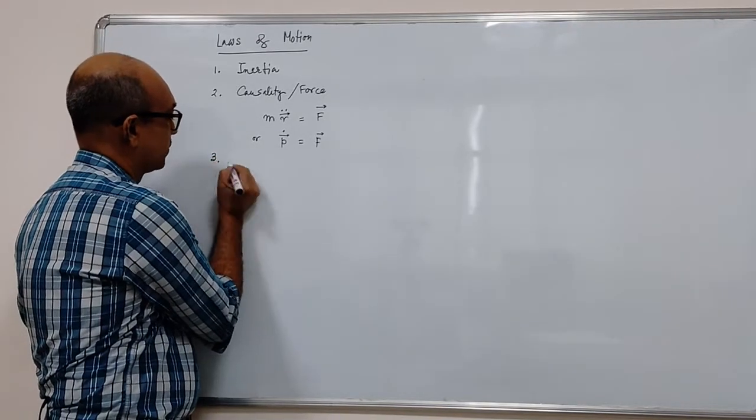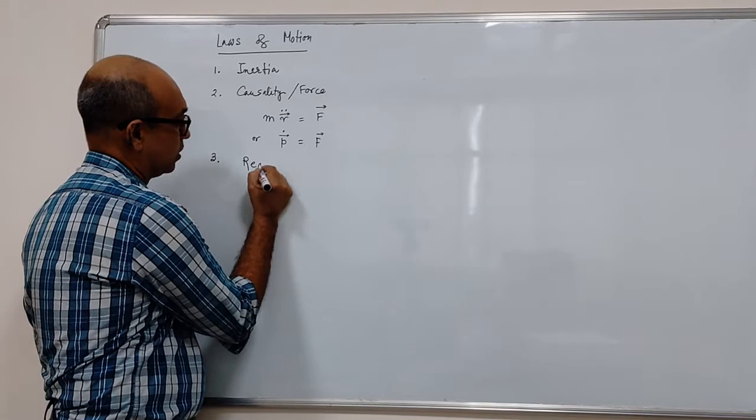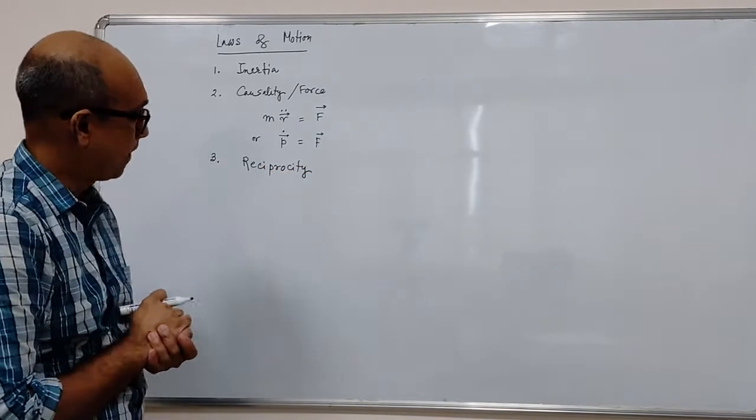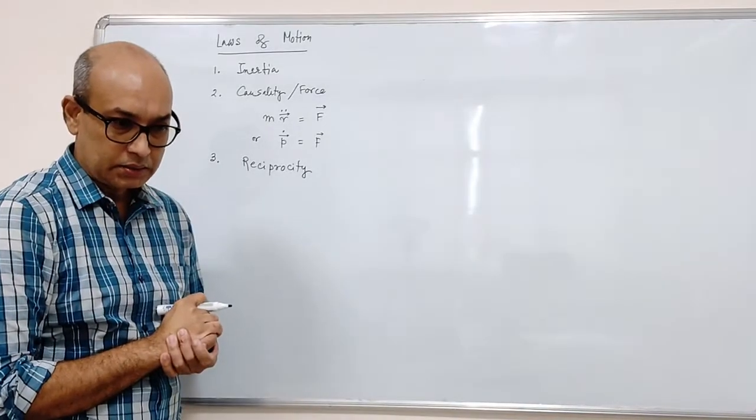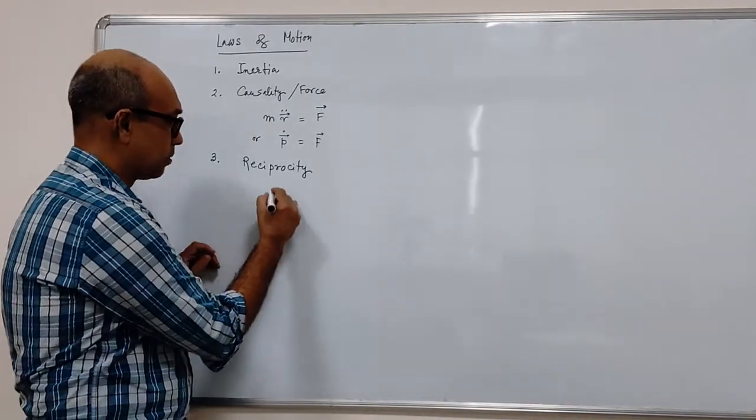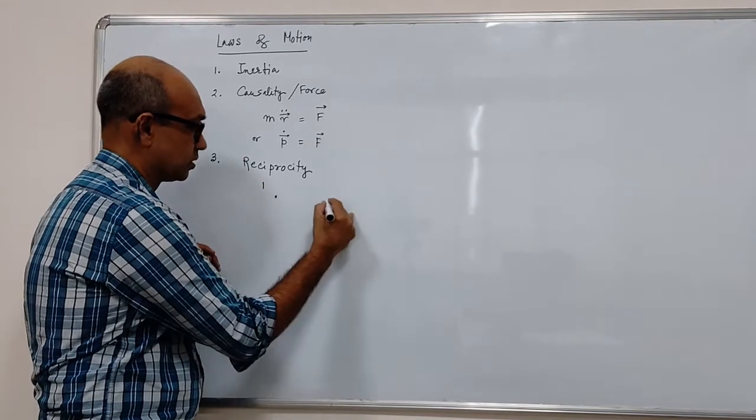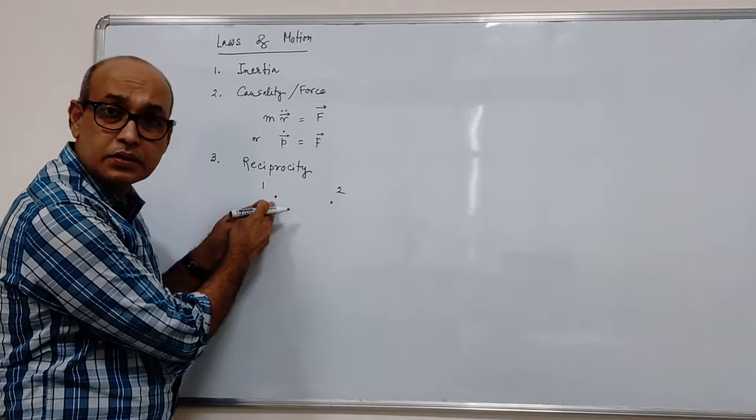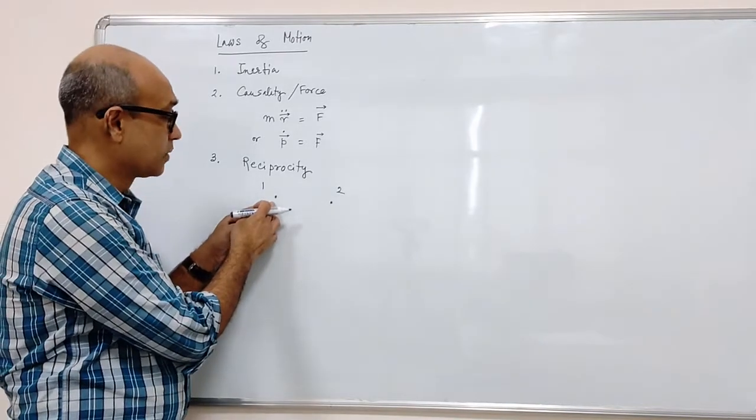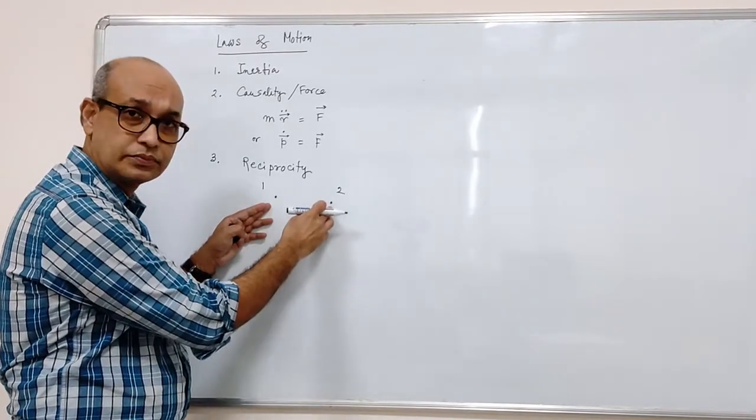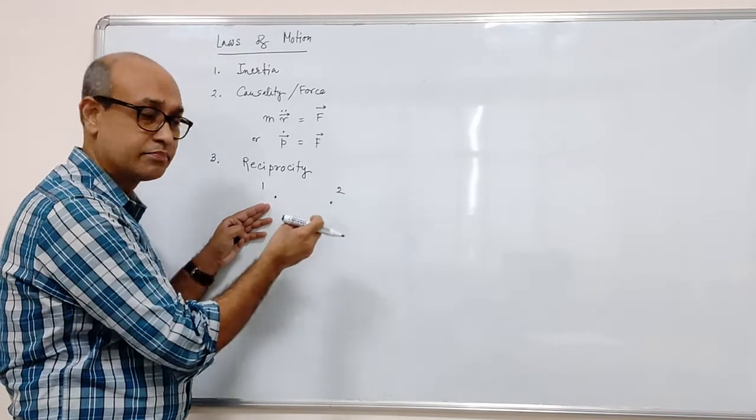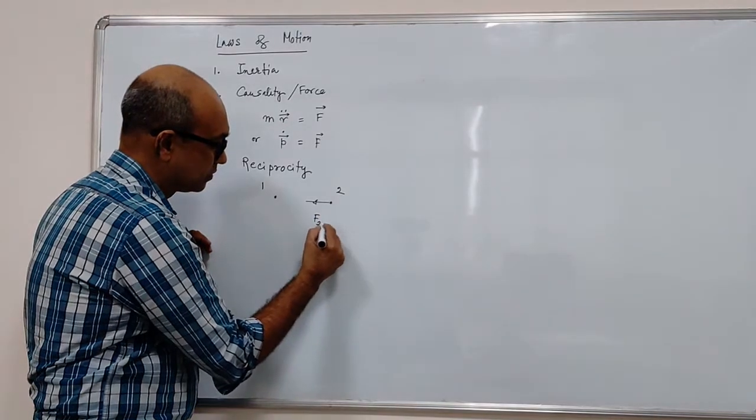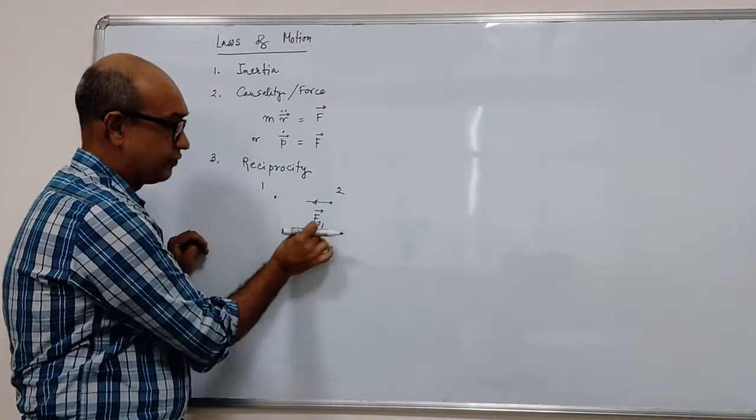The third important law that we need to know is the law of reciprocity. This says, for example, you have two objects. The first object, we are assuming this to be a point particle, is exerting some force on two, let's say an attractive pull. We call this force F21.